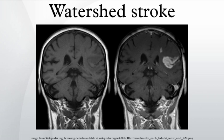Watershed strokes are named because they affect the distal watershed areas of the brain. The original terminology came from the German literature, which used the analogy of an irrigation system. German scholars compared blood flow in distal arterial territories of the brain to the last field on a farm — the area with the least supply of water and therefore most vulnerable to any reduction in flow.